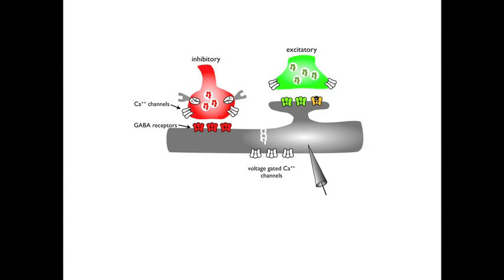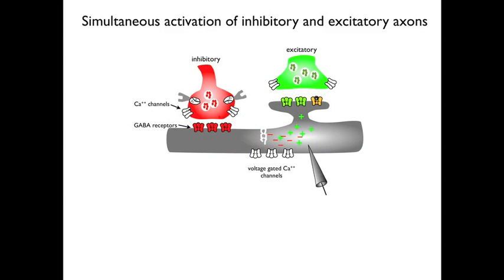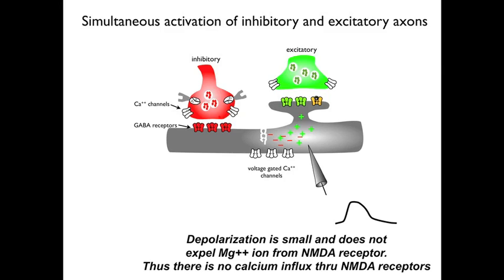Finally, we are going to change the excitatory synapse and add NMDA receptors, since almost all cortical and hippocampal cells have both AMPA and NMDA receptors in their postsynaptic membranes. There are the AMPA receptors, there are the NMDA receptors, and there is the magnesium plug in the pore of the NMDA receptor. Next, we excite both the inhibitory and excitatory fibers simultaneously. The response in the postsynaptic cell is weak because the inhibition largely cancels the excitation. The weak depolarization does not expel the magnesium ion from the pore of the NMDA receptor. Thus there is no calcium influx through the NMDA receptors, and long-term potentiation is not generated.